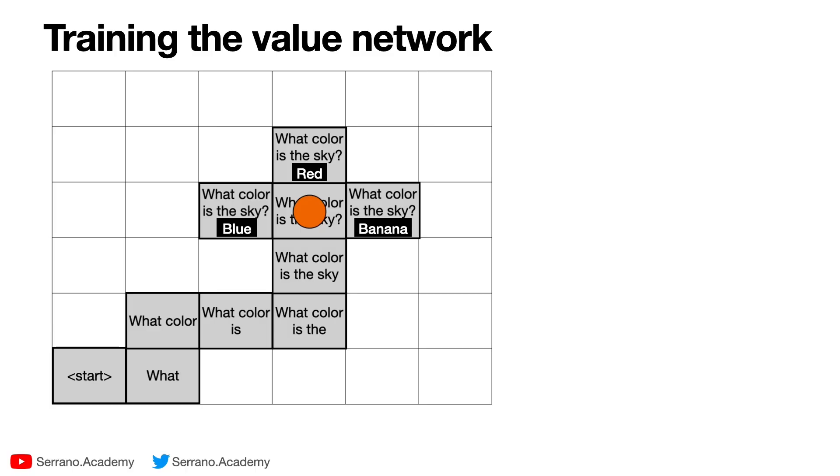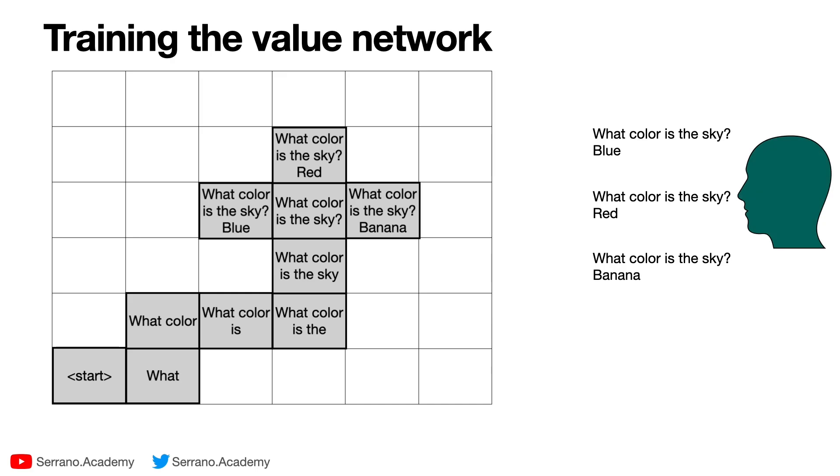And the agent could move to each one of these. Now we need to figure out what's the best one. So for that we put them over here and we give them to a human annotator. The human annotator looks at the three sentences and says, well, I think the best one is the one that continues the sentence with the word 'blue'. That one gets the gold medal, and the silver medal is for this one: 'what color is the sky? red', because it's very unlikely but you know there's the occasional sunset where the sky is red. And the bronze medal, or the last one here, is 'banana', because 'what color is the sky? banana' is not a very good answer.